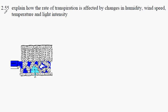EdExcel GCSE Biology Syllabus Statement 2.55. Here we're looking for explanations for changes in the rate of transpiration, which is water loss from the leaf, due to humidity, wind speed, temperature, and light intensity.